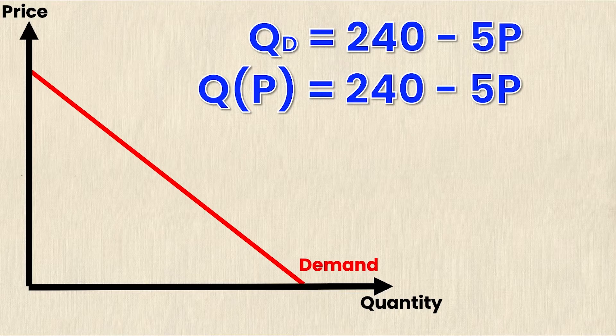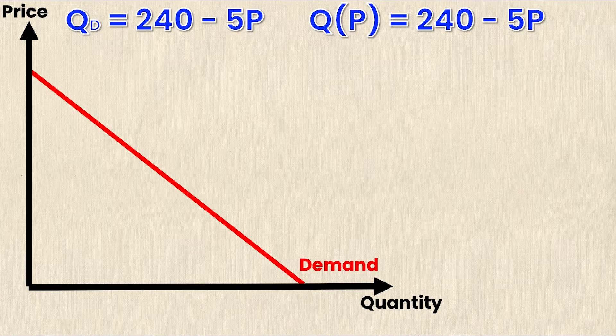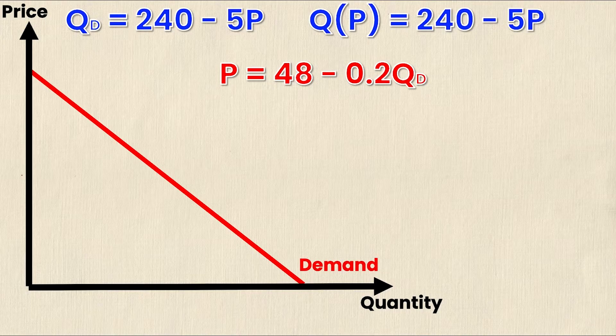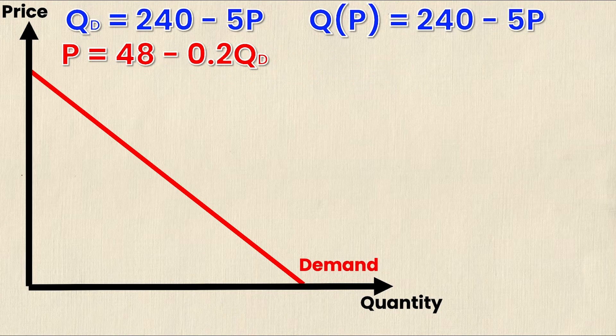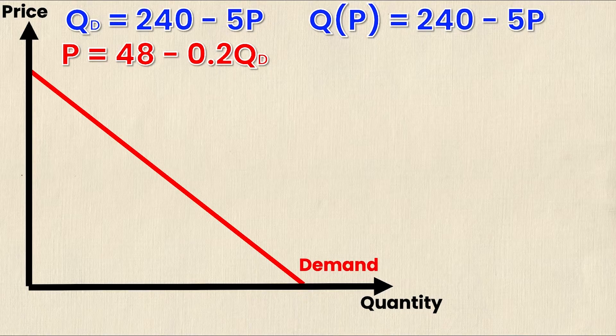That's the normal demand function, but what if we wanted to calculate the inverse demand function? The inverse demand function is P equals 48 minus 0.2Q. But the aim of this video is to show you how you can take the original demand function and turn it into the inverse demand function step by step, starting by rewriting the original demand function.